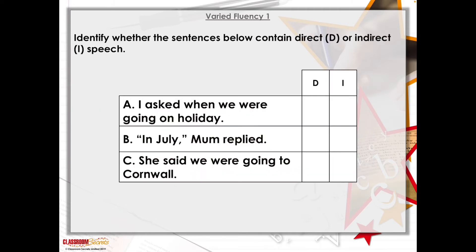Identify whether the sentence below contains direct or indirect speech. Direct speech is where a character or person has actually spoken — these are the words that have come out of their mouths, said out loud. Indirect speech is where you're saying, for example, 'I spoke to Mrs Logan yesterday and she said we could have a party on Friday.' Those aren't the exact words Mrs Logan said herself — you're just repeating and recalling a conversation you had with her.